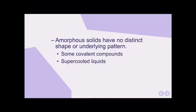An amorphous solid has no distinct shape or underlying pattern, and some covalent compounds exhibit this. The picture in the textbook is a shattered piece of glass, a graduated cylinder on figure 11-6. You've seen them in the lab before. When it shatters, it breaks into random fragments. There's no structure to it. It's completely random. That's what an amorphous solid is.